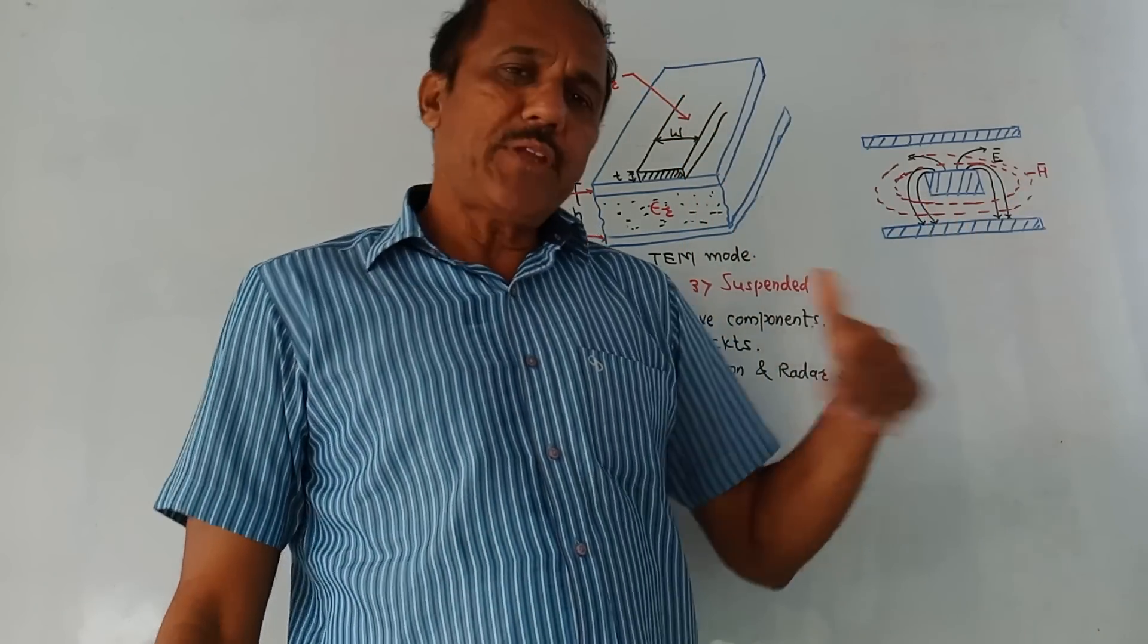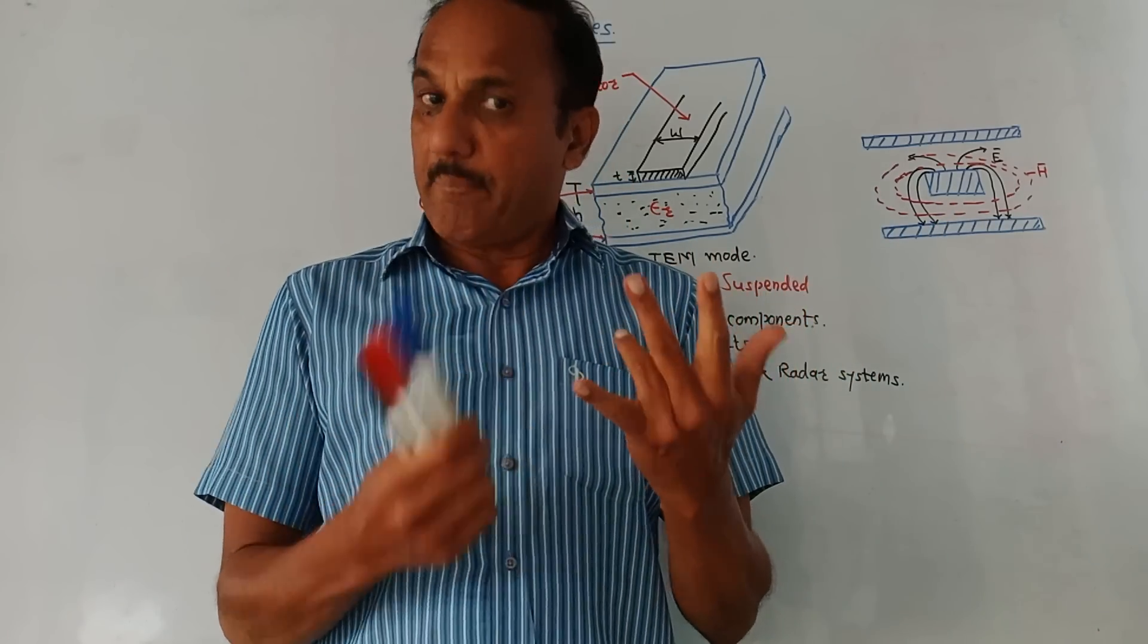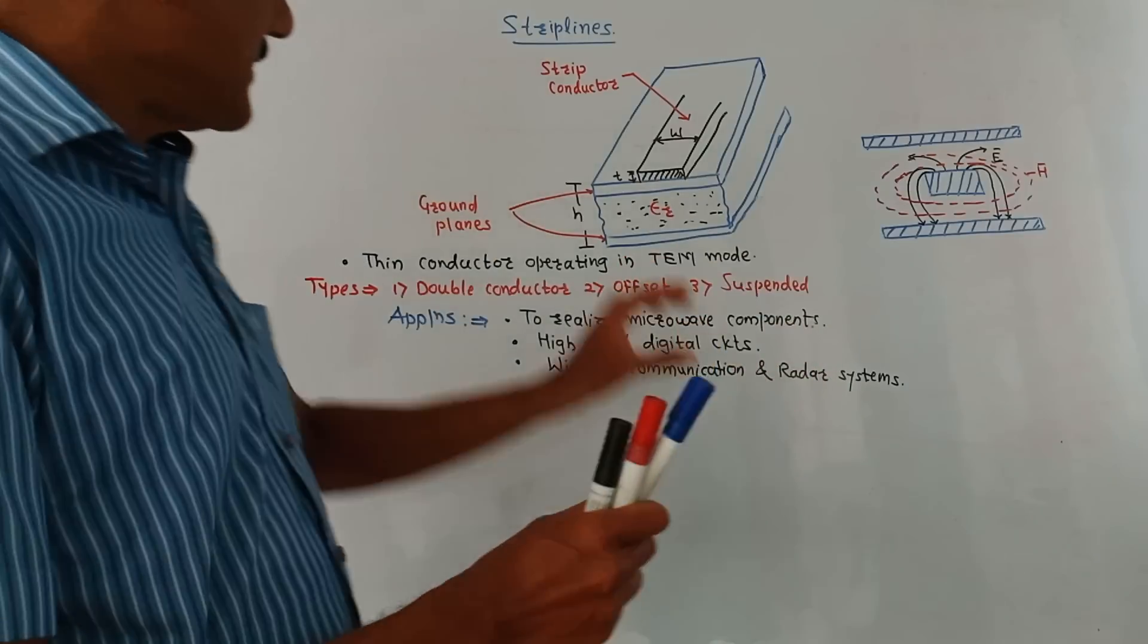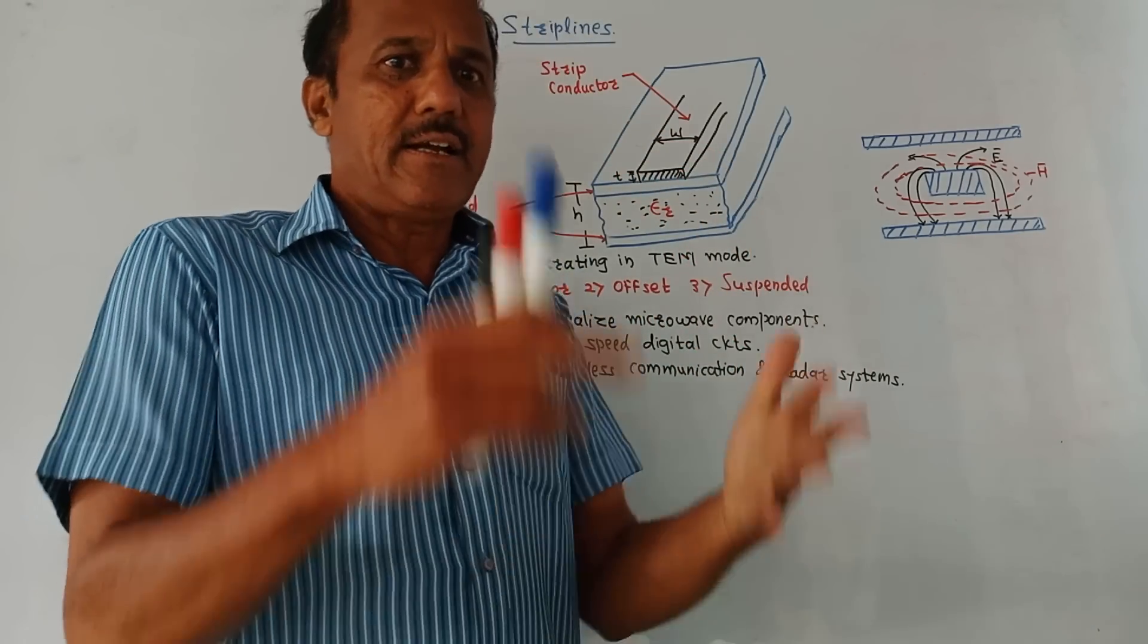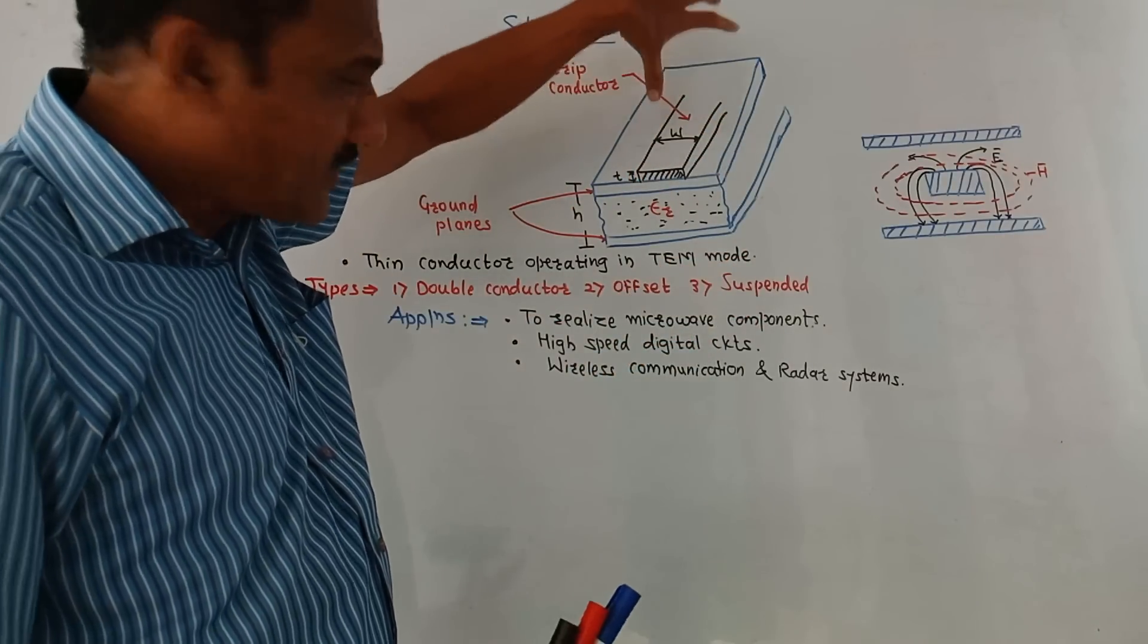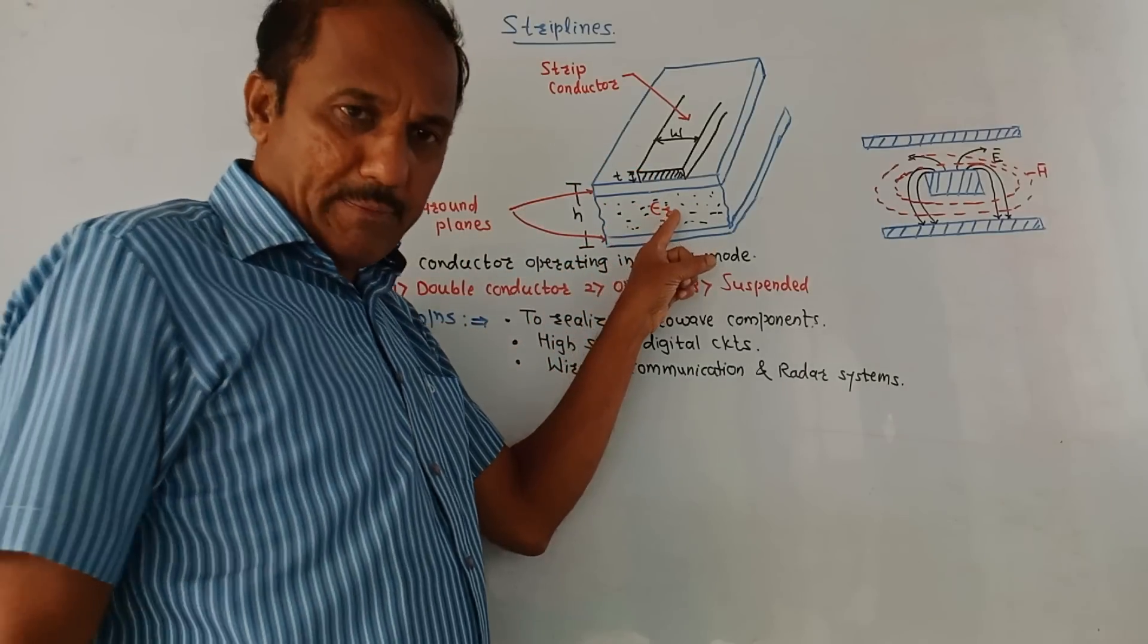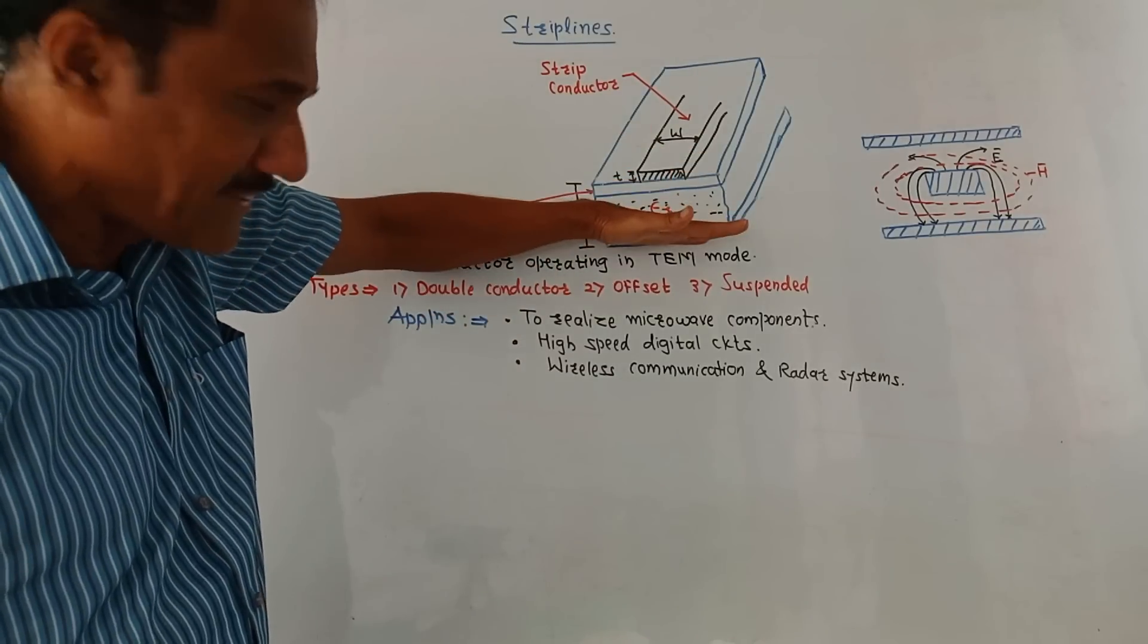Next part is strip lines. From the exam point of view, you may expect direct questions like draw structural details of a strip line, what are its types, and what are the applications of strip line. So this diagram shows structural details of a strip line. Basically, what is a strip line? It is similar to the coaxial cable. It consists of a strip conductor which is a thin strip conductor, and this strip line operates in transverse electromagnetic, that is TEM mode. This is the diagram which represents structural details. This is the strip conductor having width W. T is the thickness of the strip conductor. The base is a dielectric substrate having permittivity Epsilon R. This height is H and it consists of two ground planes. This is top ground plane. This is bottom ground plane. So the structure is symmetric.